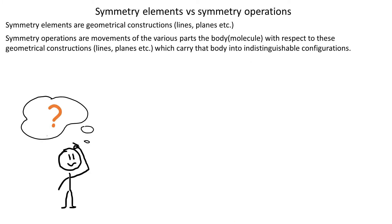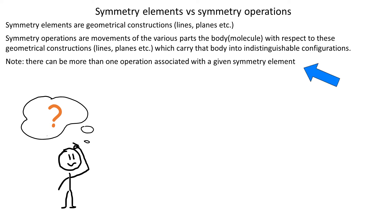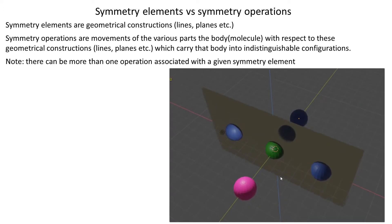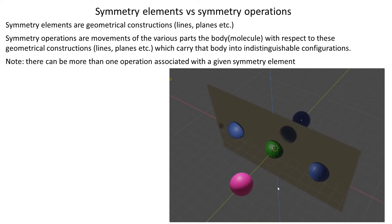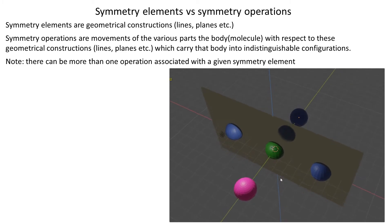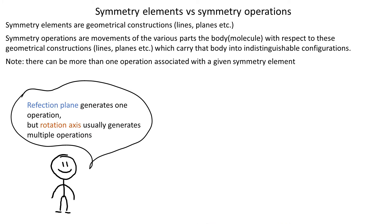At first it might seem pointless — why do we make this distinction? Well, there can be more than one operation associated with a given symmetry element. In the case of reflection, a single reflection plane positioned in a specific place can only give rise to one unique reflection. Yes, we can reflect a second time, but we only go back to the starting configuration. However, usually a rotation axis creates multiple operations.